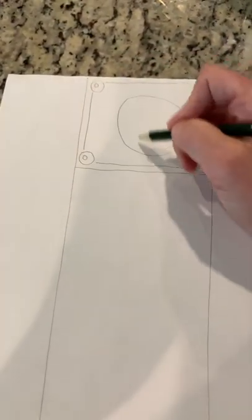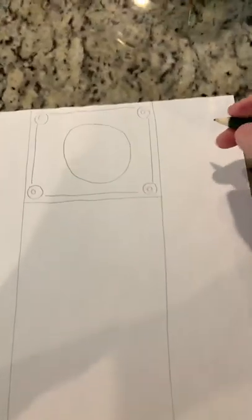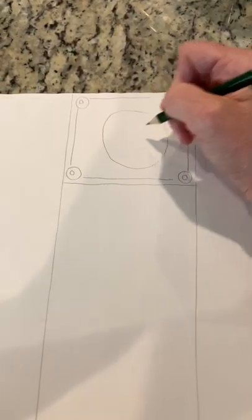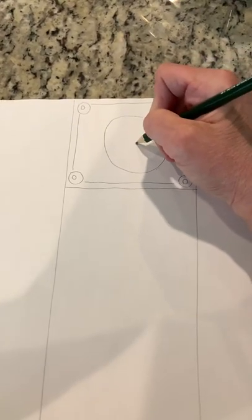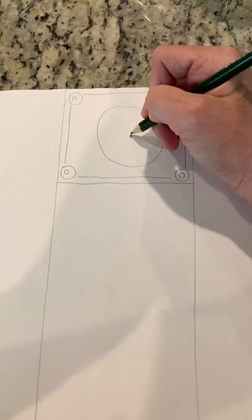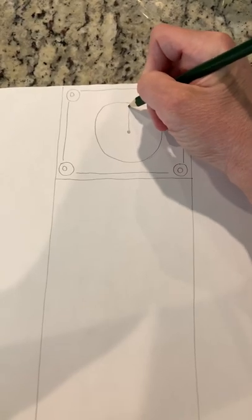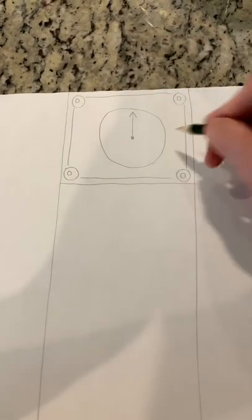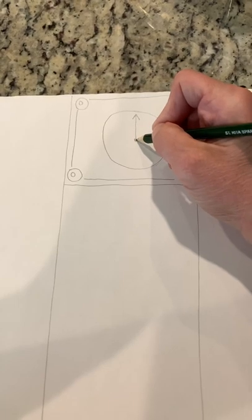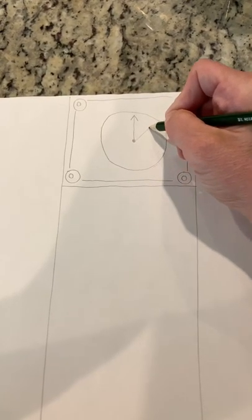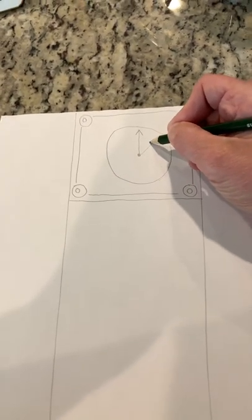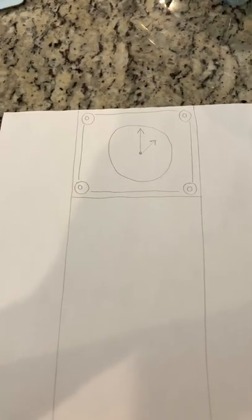In our nursery rhyme, the clock strikes one, so we're gonna make it one o'clock. In the center of that circle, draw a dot, and then draw a line straight up and stop. Give it an arrow. Then from that circle, angle it up—don't go as far out—stop and give it an arrow. There it is, it's one o'clock.